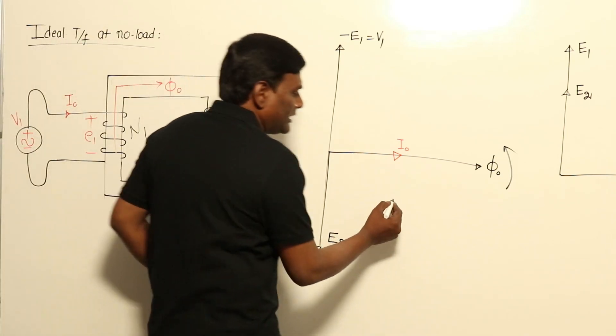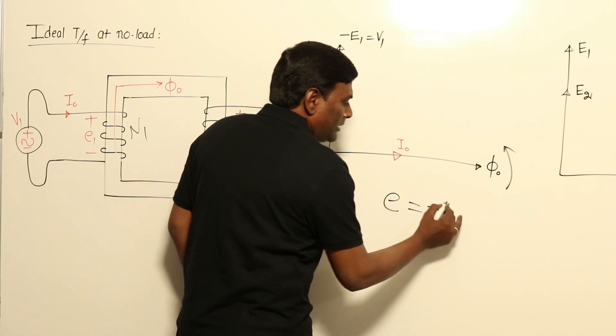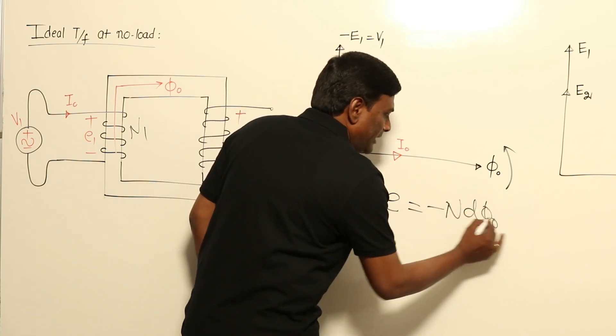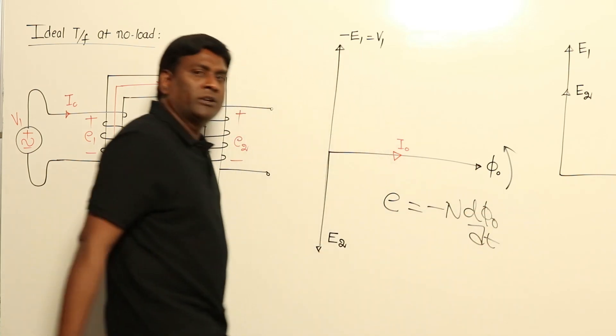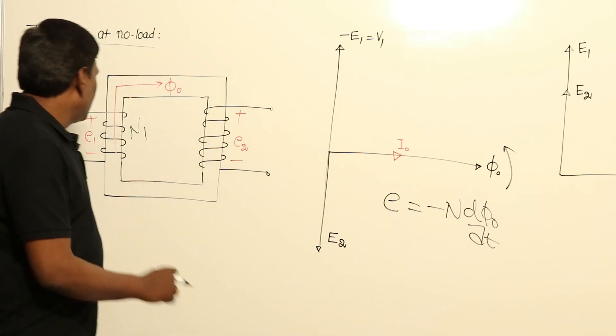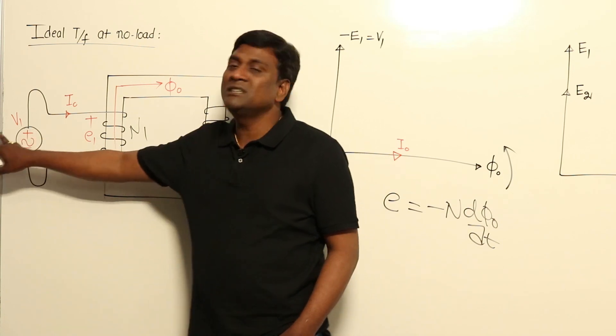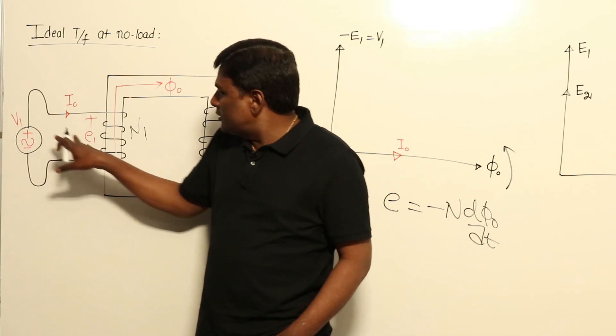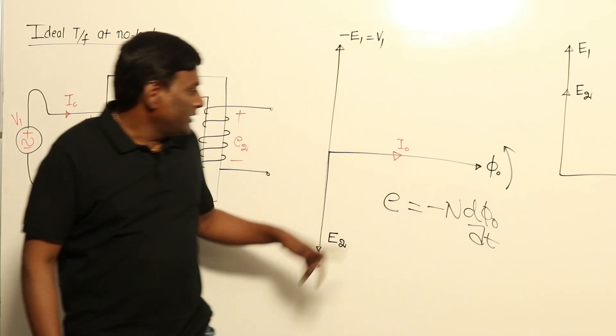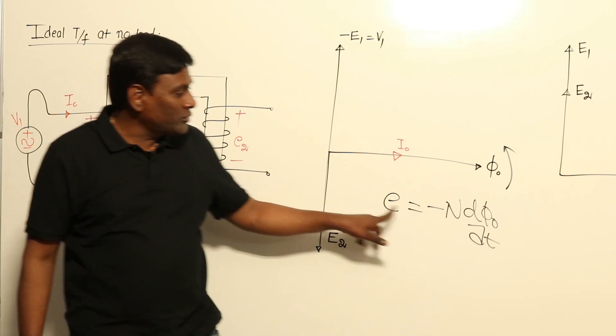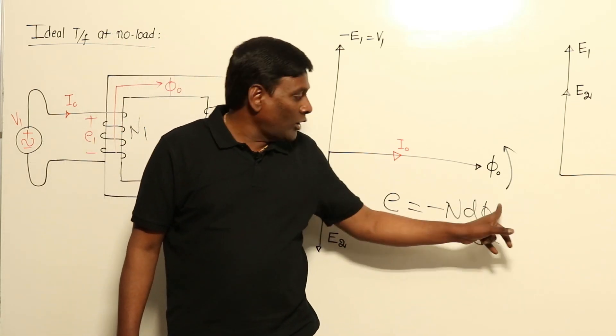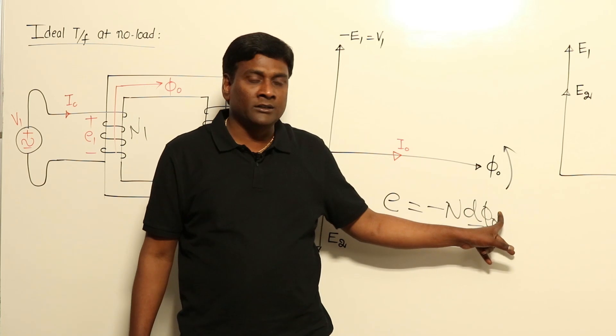By Faraday's law, we know that induced voltage is going to be minus N dΦ0/dt. Now, for example, this E1 should be sinusoid because V1 is sinusoid. So in order to make E1 sinusoid, in order to make induced voltage sinusoid, N dΦ0/dt operating flux should be sinusoid.